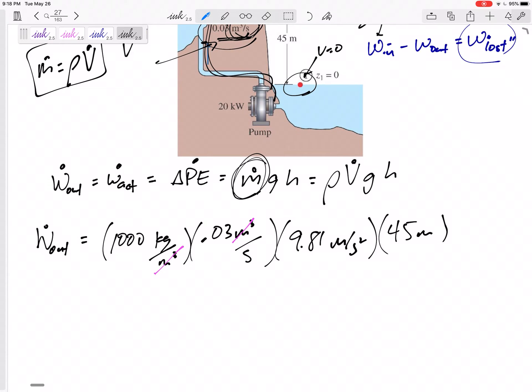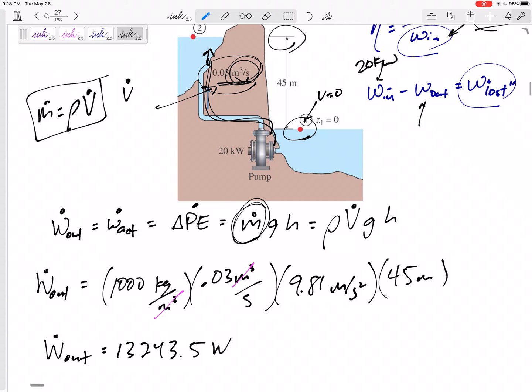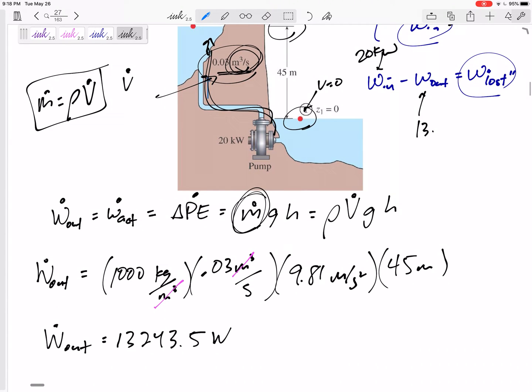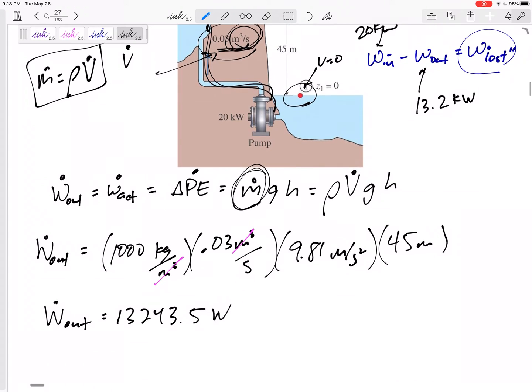And we would multiply those through. Let me see here. 1,000 times 0.03 times 9.81 times 45. And this would be watts. This would be in watts. W out would be 13,243 watts. All right. So that right there is 13.2, we'll say, kilowatts.